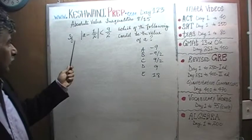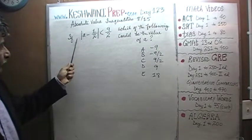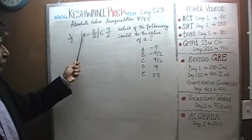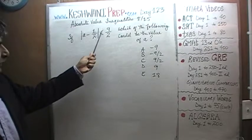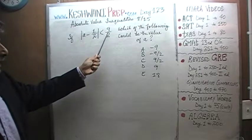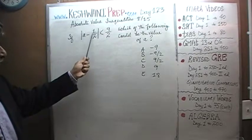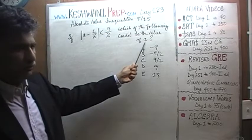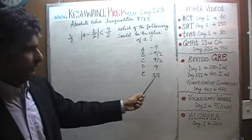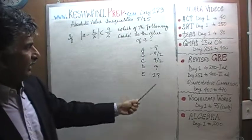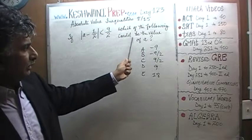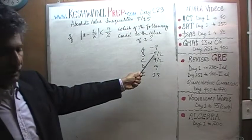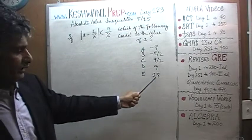The problem for today is already on the blackboard. We are told that if the absolute value of A minus one-half is less than nine-halves, which of the following could be the value of A? The answer choices are negative nine, negative nine-halves, positive nine-halves, nine, and eighteen.